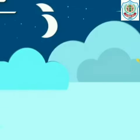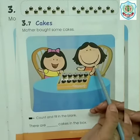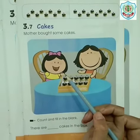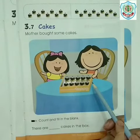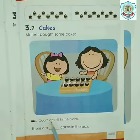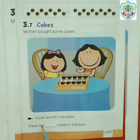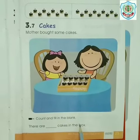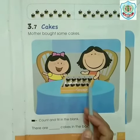Now move to the page. The topic is cakes. Mother bought some cakes for Neha and Neha is very happy to have these yummy cakes. The point is: count and fill in the blank. There are dash cakes in the box. Let's count — how many cakes are there?